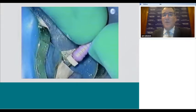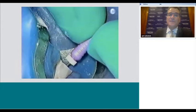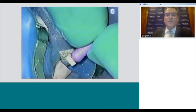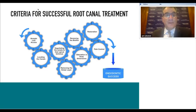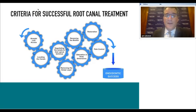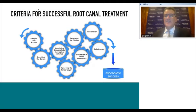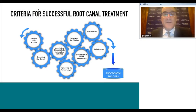We create the glide path in a watch-winding motion—quarter-turn clockwise, quarter-turn counterclockwise—and can also facilitate this with motorized or reciprocating handpieces like the M4. When we follow all these moving parts correctly—straight line access, finding and negotiating canals to their apical terminus, removing the smear layer, eliminating bacteria in their biofilm, obturating in three dimensions, and restoring—success in root canal treatment will be well into the 90s.